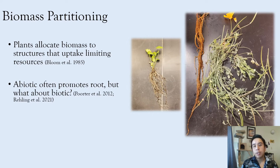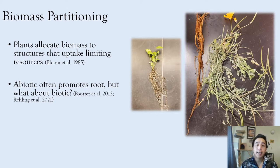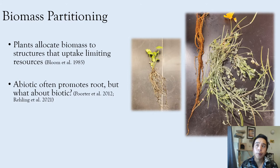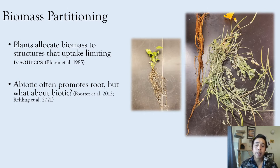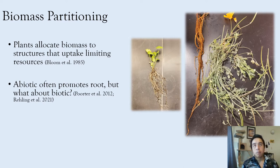Biomass partitioning is a really important plant physiological mechanism that allows plants to divert resources and allocate biomass to structures that uptake the most limiting resources. So in drought or nutrient-poor systems, plants may allocate more biomass towards root structures and increase root growth, whereas in areas where there's high above-ground competition or a need for light or space, plants may adjust or allocate more biomass towards their leaves or shoots. In areas where plants need high reproductive output, they may allocate more resources to reproductive structures.